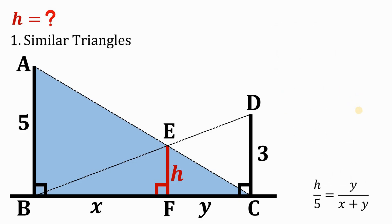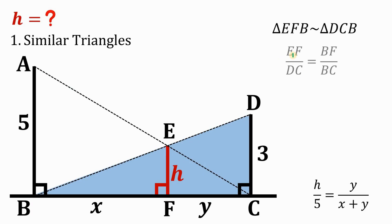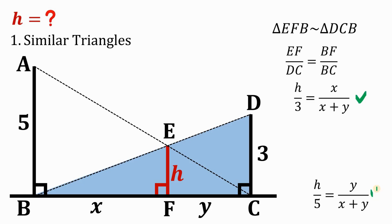Now let's focus on triangle EFB. It is not hard to see that triangle EFB is similar to triangle DCB. Since they are similar, we can say EF over DC equals BF over BC. From the figure, EF is H, DC is 3, BF is X, and BC is X plus Y.